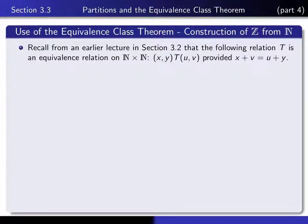The main idea in constructing Z from N is to introduce this relation, which we considered back in section 3.2. Let's define the relation T on the underlying set N×N to be: (x, y) is T-related to (u, v) provided x plus v is equal to u plus y. And we showed in that lecture that this is an equivalence relation.